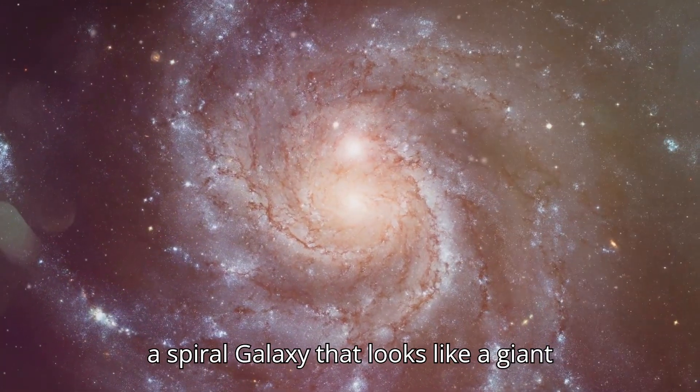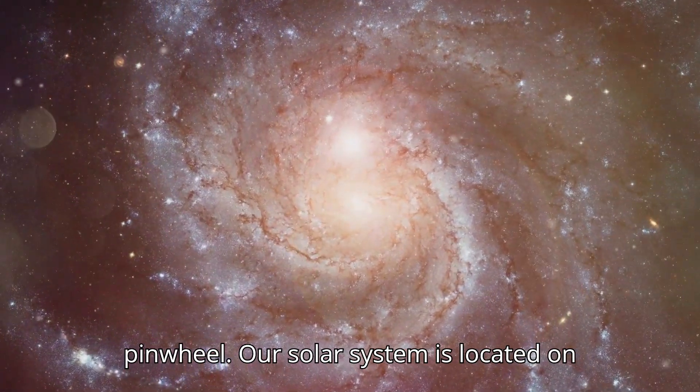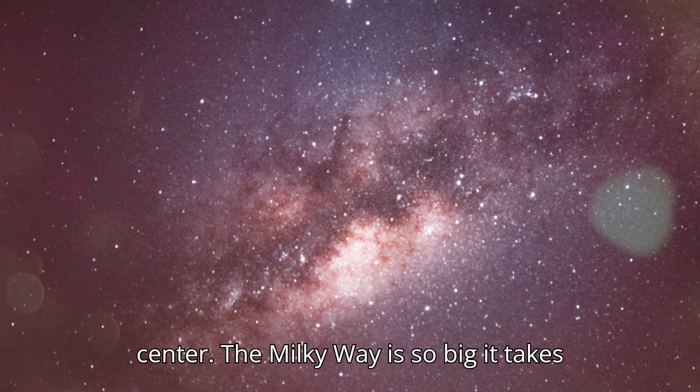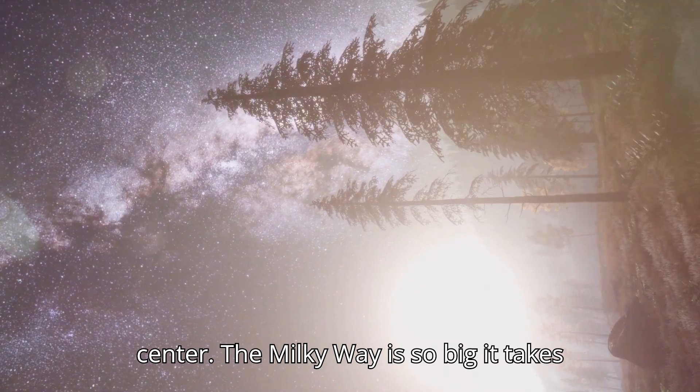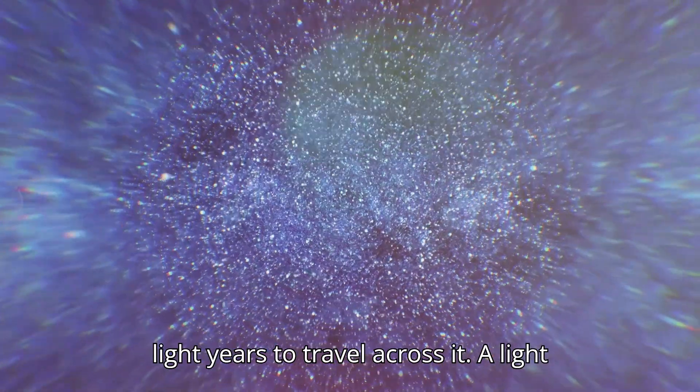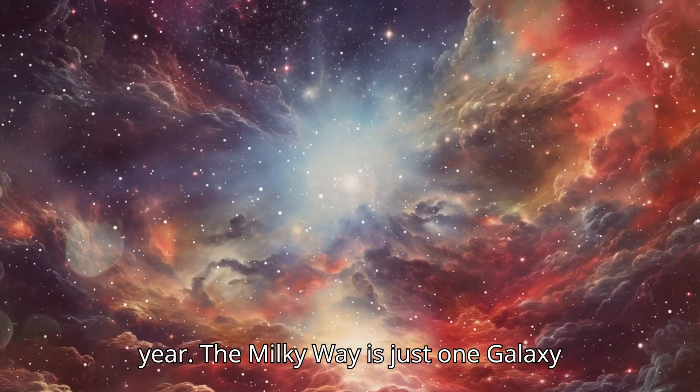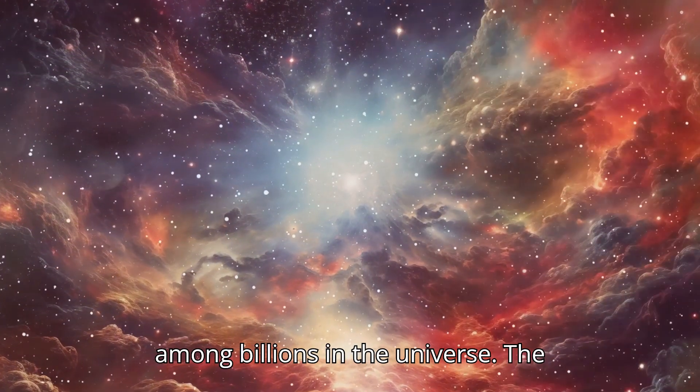The Milky Way is a spiral galaxy that looks like a giant pinwheel. Our solar system is located on one of the spiral arms, not in the center. The Milky Way is so big, it takes light years to travel across it. A light year is the distance light travels in one year. The Milky Way is just one galaxy among billions in the universe.